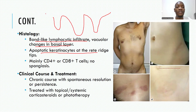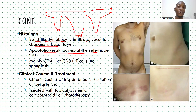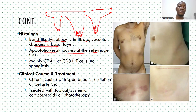To explain the rete ridges: if that is your epidermis, the rete ridges project downward. At the base of the rete ridges, in this particular condition, you find necrotic keratinocytes. Mainly you will see CD4 and CD8 cells, but there will be no spongiosis.